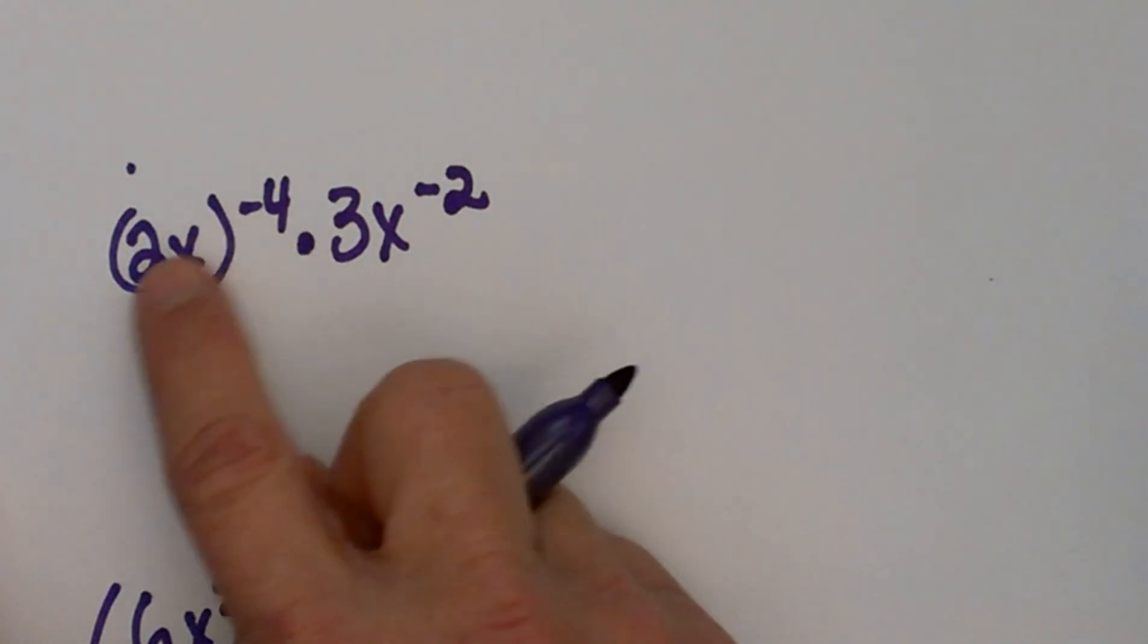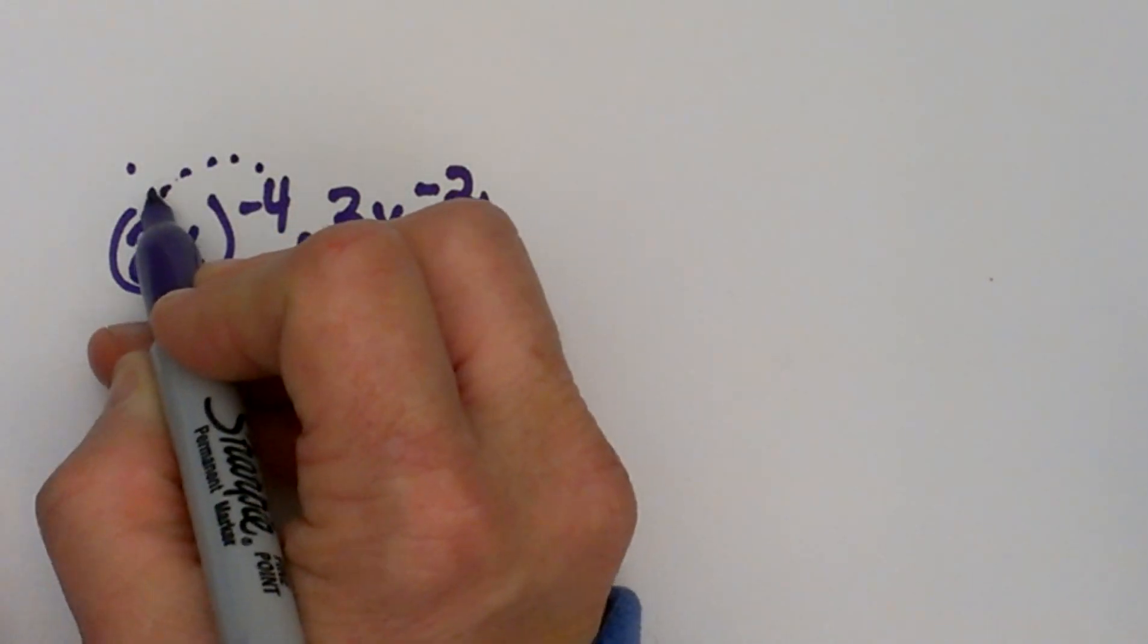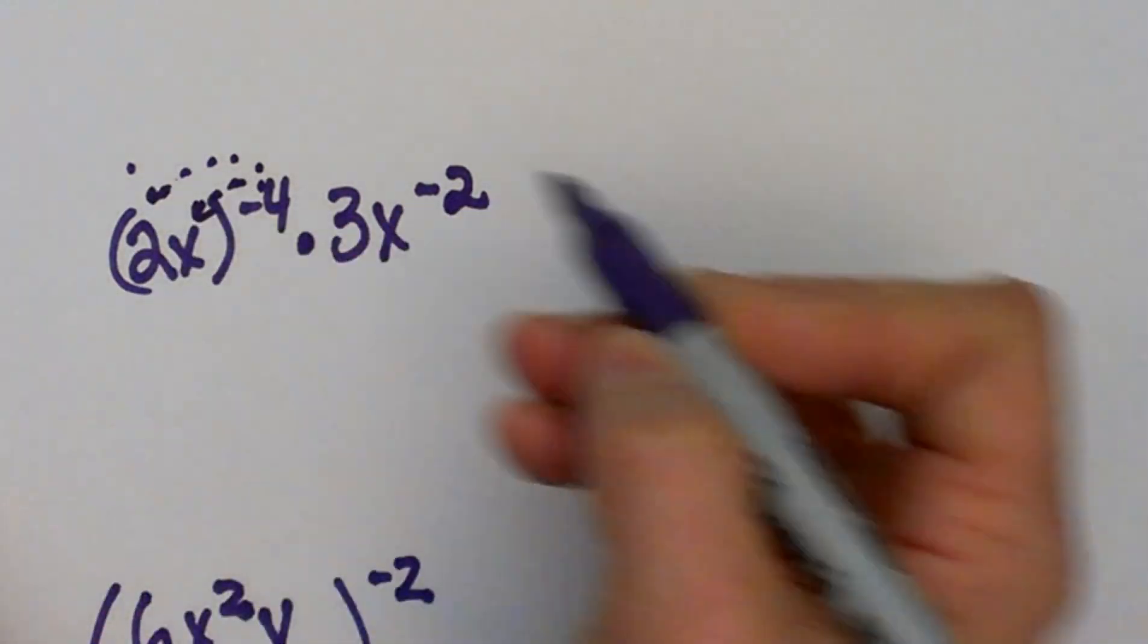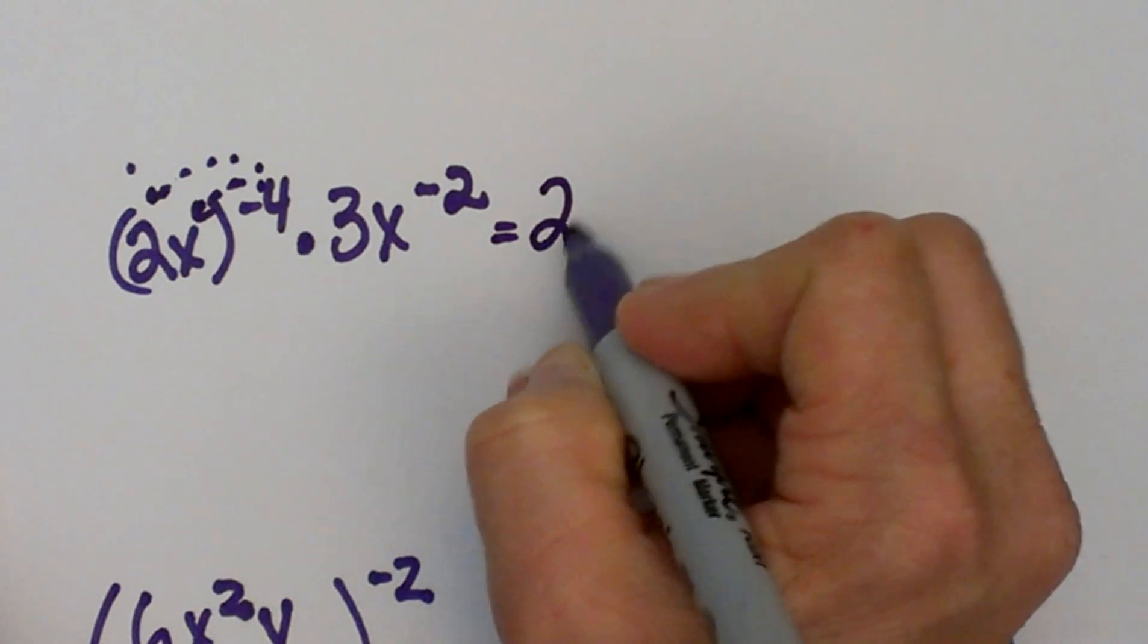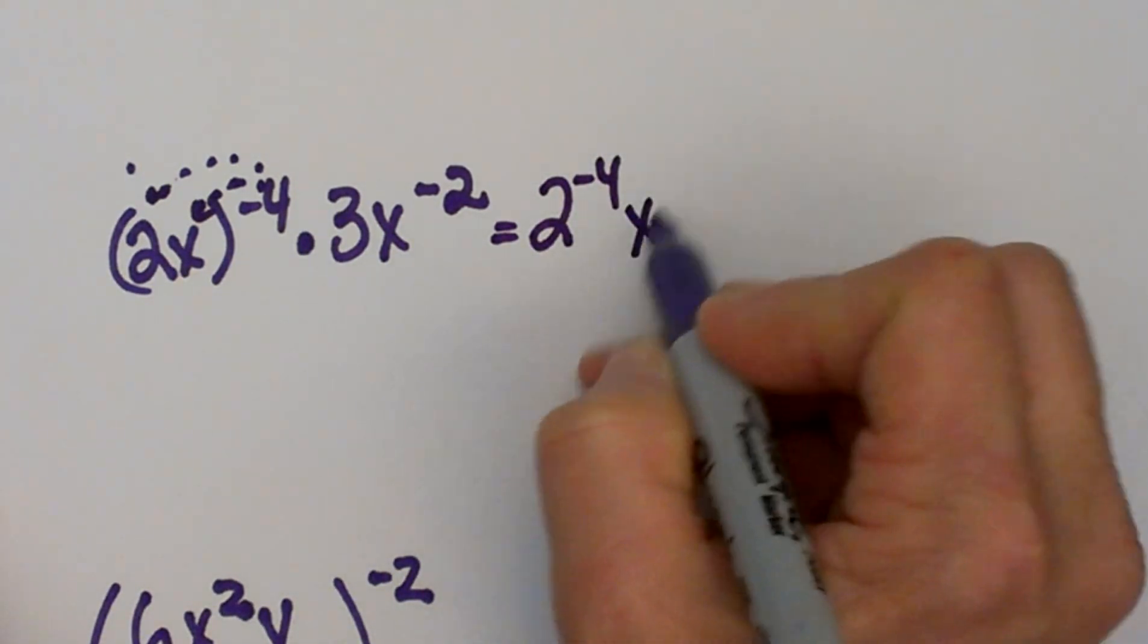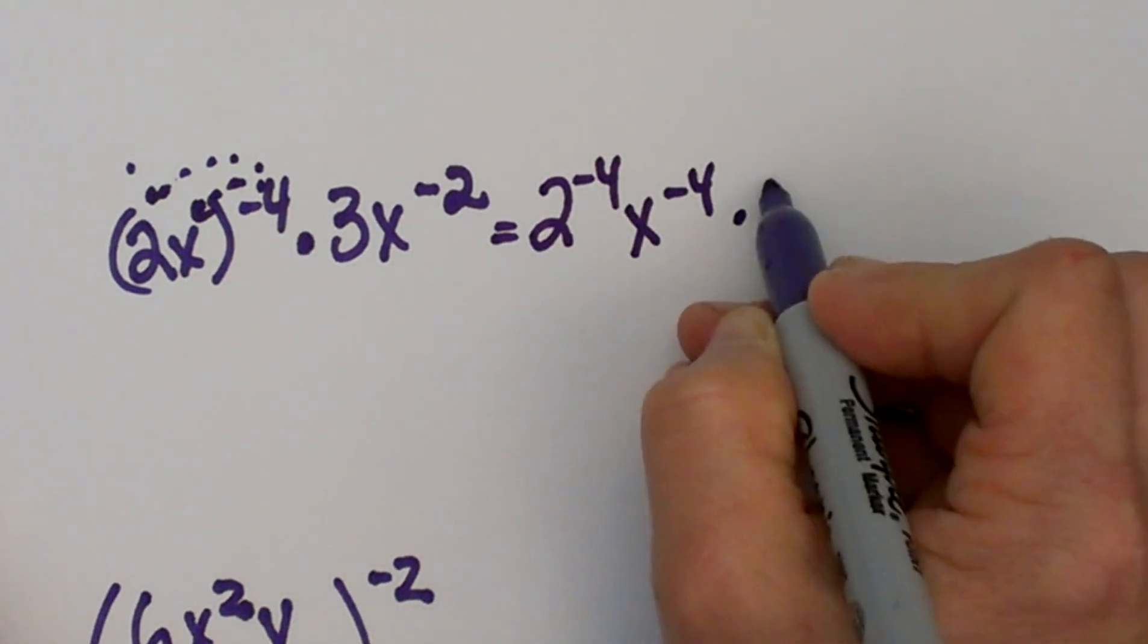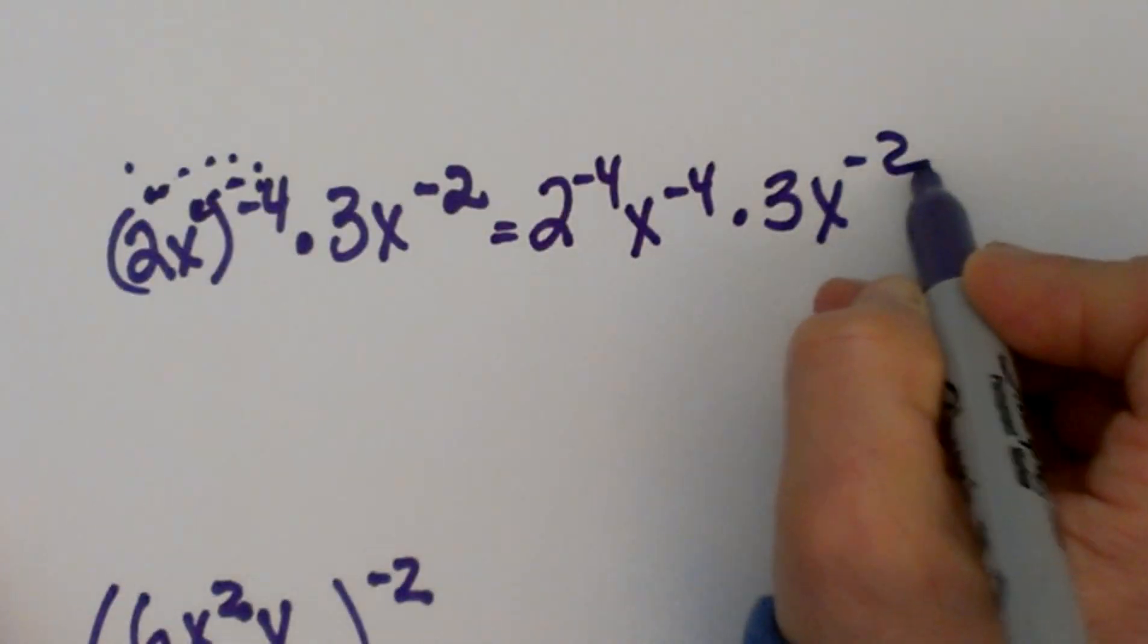So let's first distribute this exponent to both of my terms inside here. So I'm going to get 2^(-4) and x^(-4) times 3 times x^(-2).